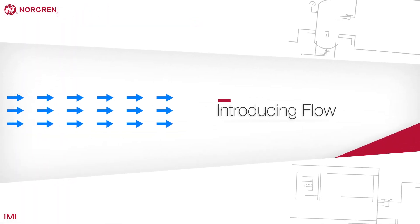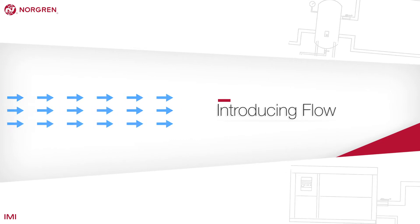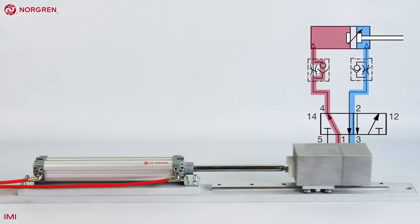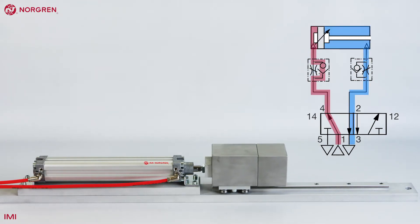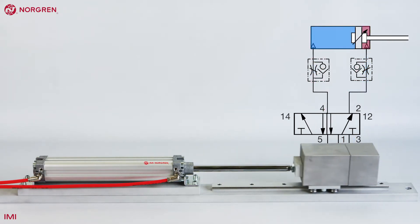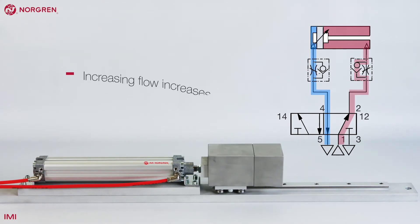Introducing flow. Flow is the amount of air that can flow over a given time. Increasing flow increases the speed an actuator operates at.